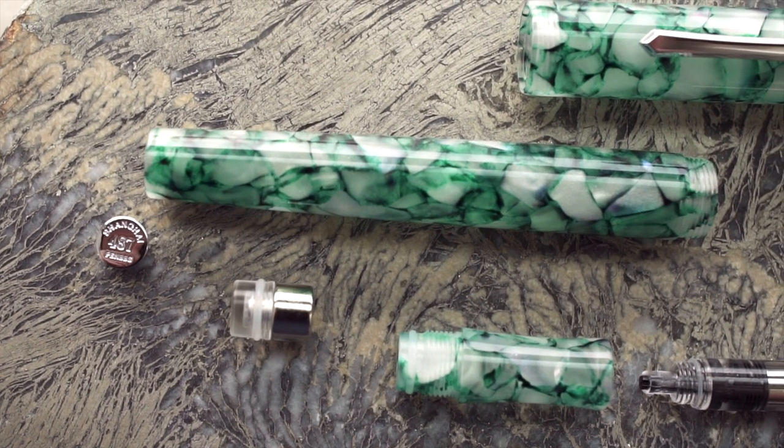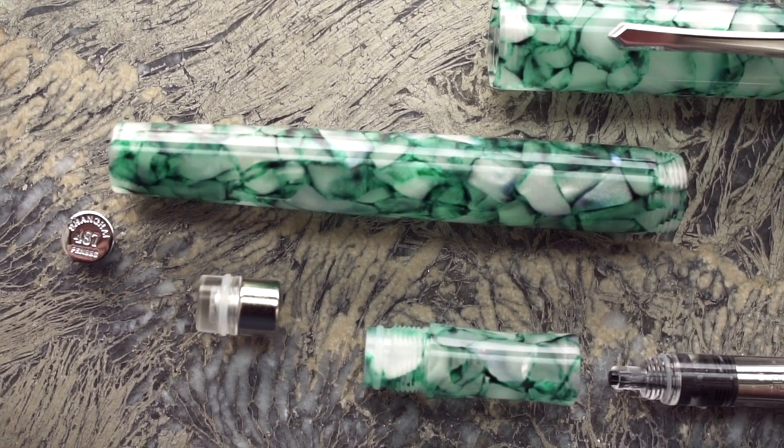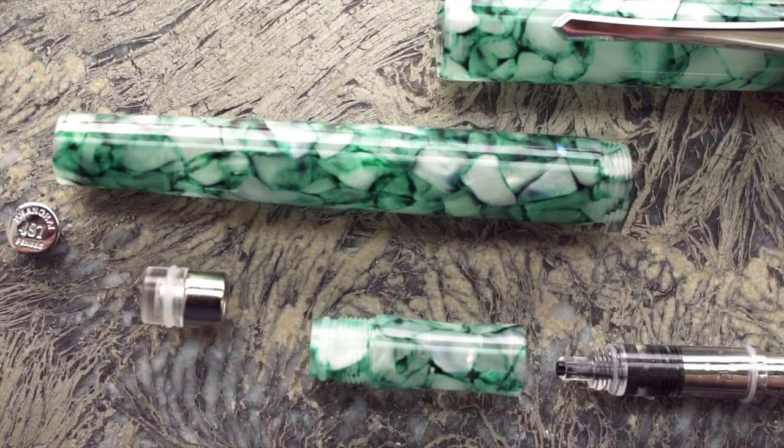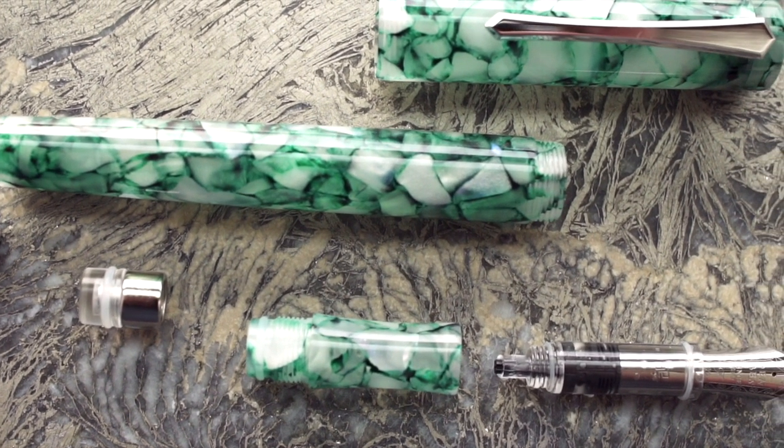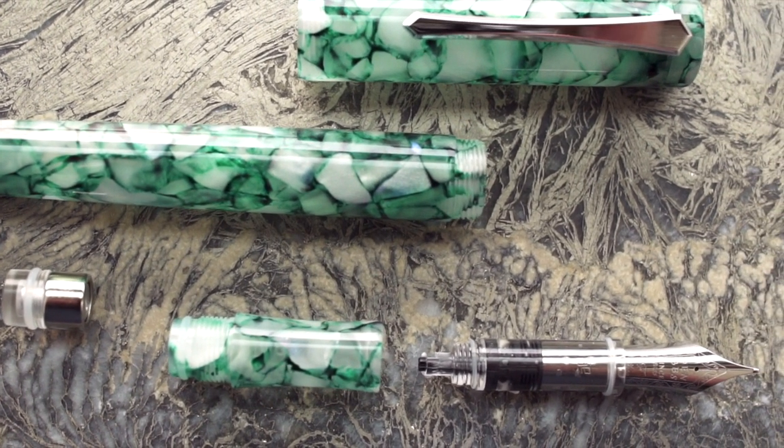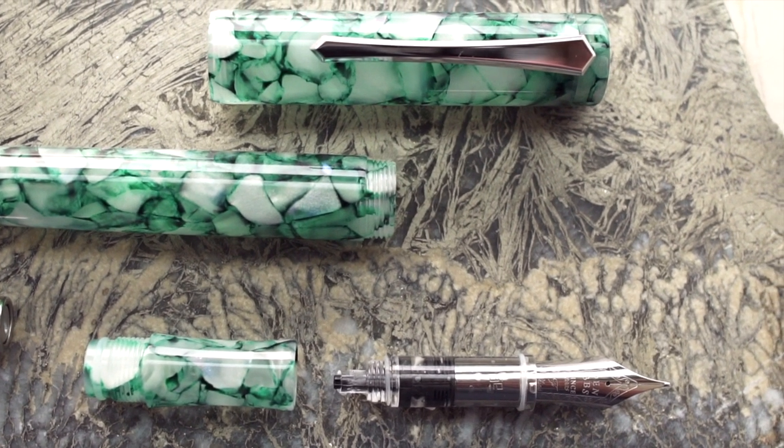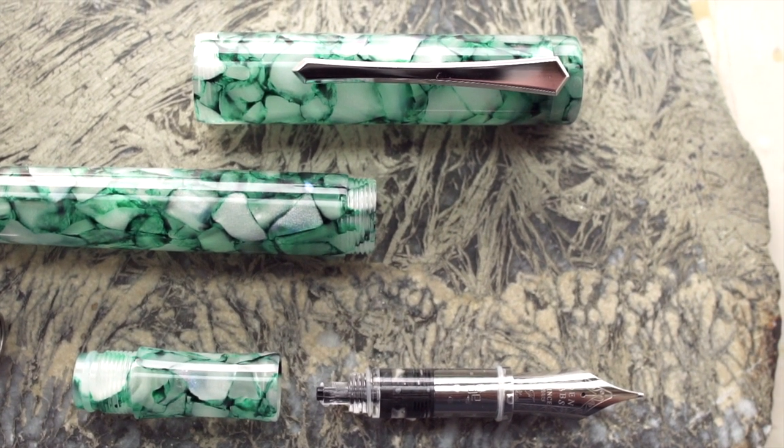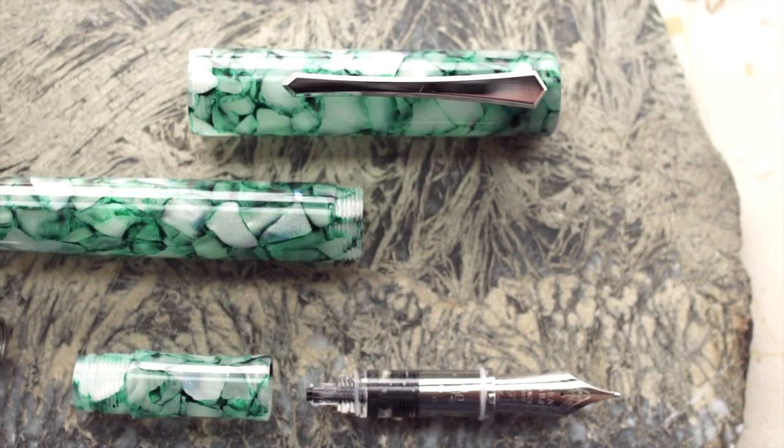There's the end cap, the barrel, the piston with a magnet in it, the section with an o-ring, and then the nib unit with two o-rings. Pen BBS puts a lot of o-rings on their stuff, which is pretty nice. And then the cap.